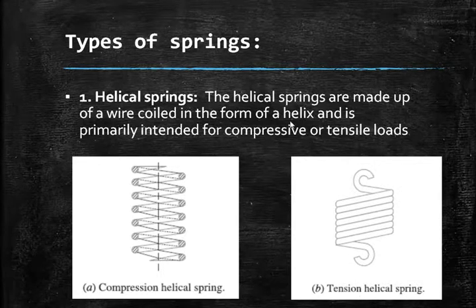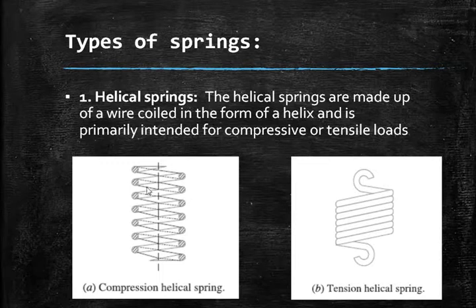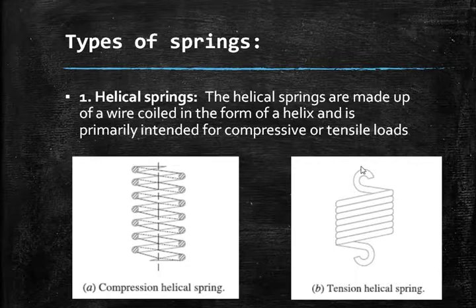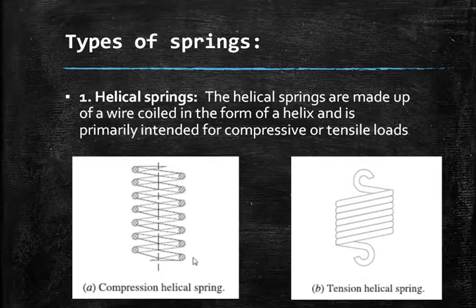The helix shape of the spring can be seen in staircases or in DNA structure. The wire is wound in this helical shape. If the spring has eyes at the ends it is used for tension applications, with closely coiled coils. If the ends are flattened it is used in compressive applications, where there is a gap between the coils.